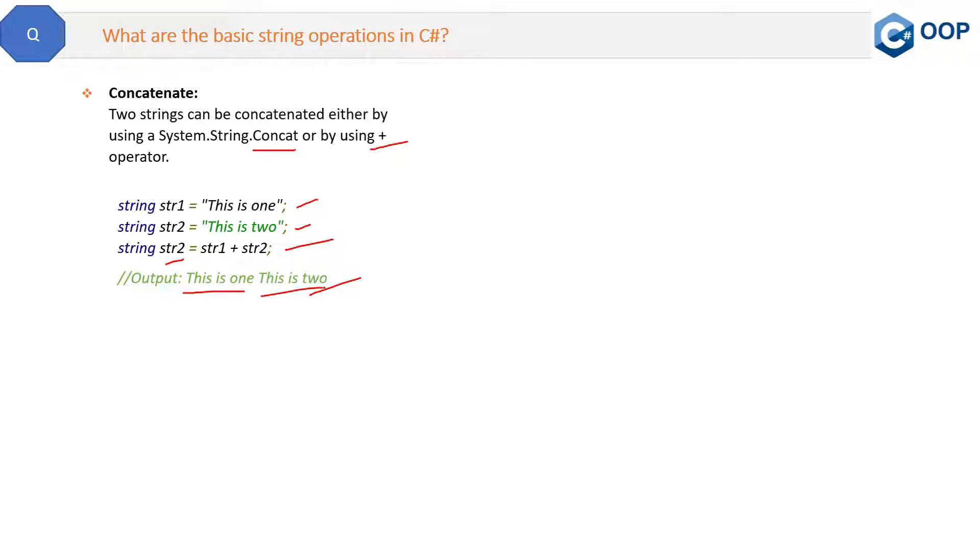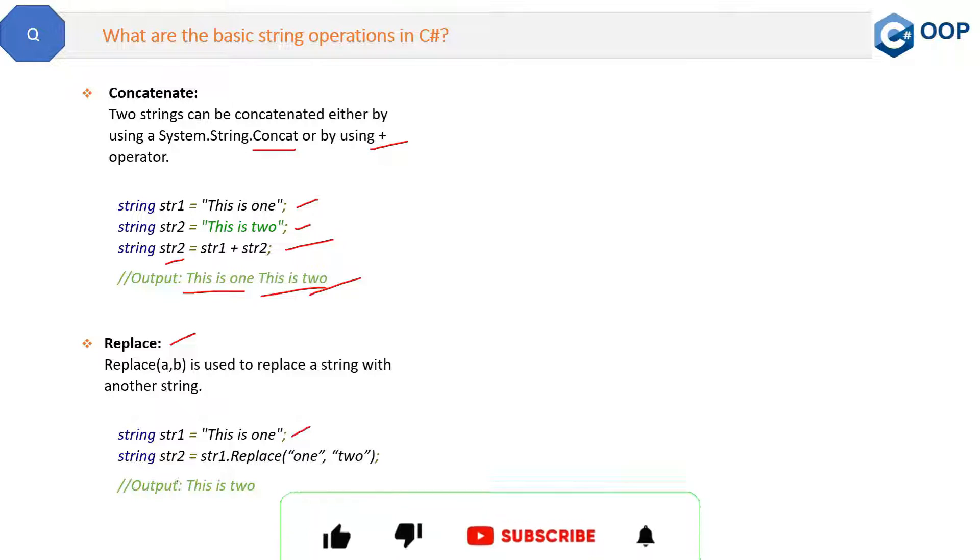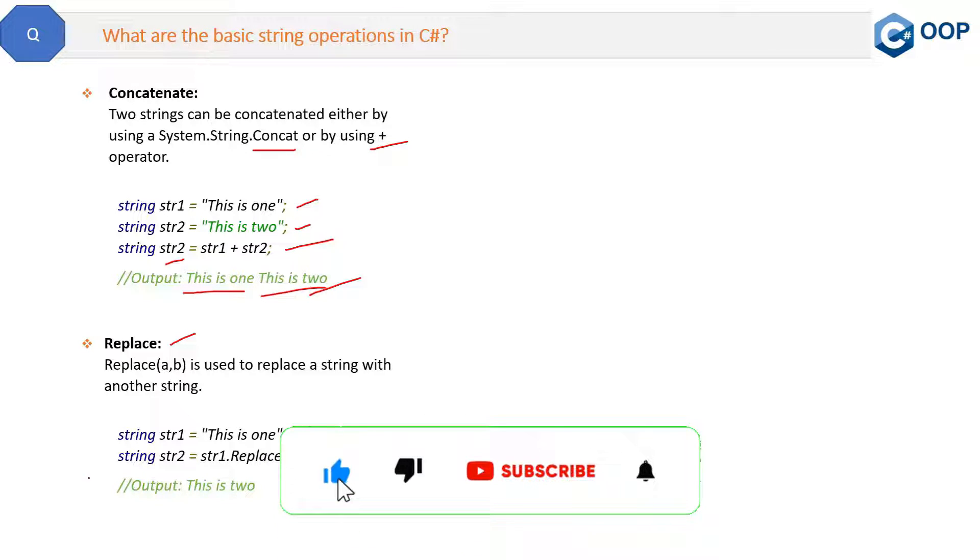Next important method of the string class is Replace. What this Replace will do: for example, if you have string str1 'This is one' and you have string str2, you are creating it by replacing 'one' with 'two'. So this will just replace 'one' with 'two', so the output will be 'This is two'. This is the purpose of the Replace method.